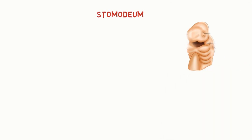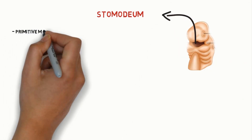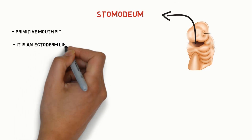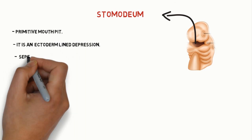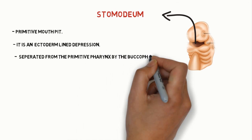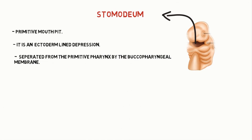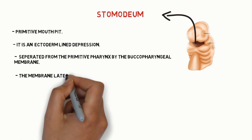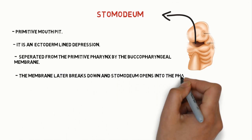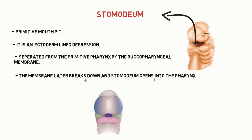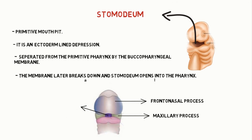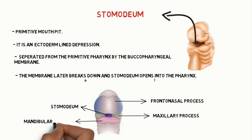What is stomodeum? It is a primitive mouth pit. It is an ectoderm-lined depression during development of the face, separated from the primitive pharynx by the buccopharyngeal membrane. The membrane later breaks down and the stomodeum opens into the mouth. As you can see in this picture, the stomodeum is surrounded by five processes.